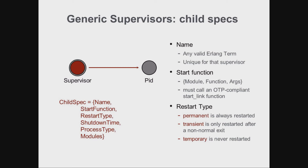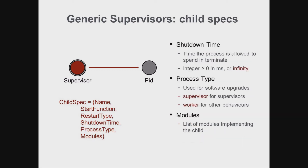You cannot add pure Erlang processes to an OTP supervision tree — they have to be OTP behaviours or special processes. The restart type tells the supervisor how to react when a child terminates. Permanent means the child will always be restarted, irrespective of whether the termination reason was normal or abnormal. Transient means we restart the child only after abnormal termination. Temporary means the child is never restarted, irrespective of whether termination is normal or not.